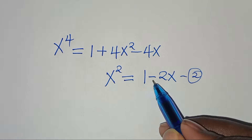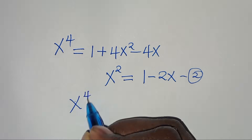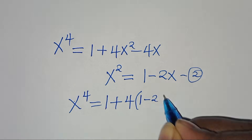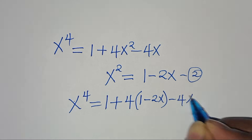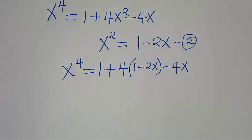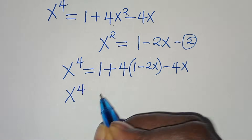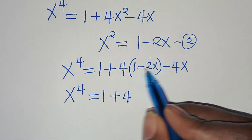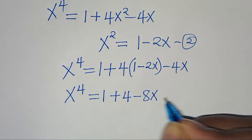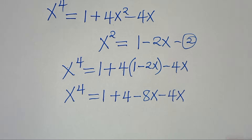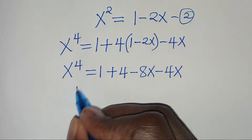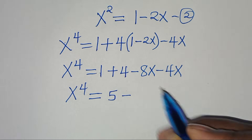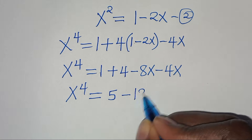So x to the power of 4 equals 1 plus 4 times 1 which is 4, plus 4 times minus 2x which is minus 8x, then subtract 4x. So we have x to the power of 4 equal to 1 plus 4, which is 5, minus 8x minus 4x, which is minus 12x.